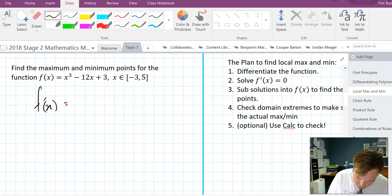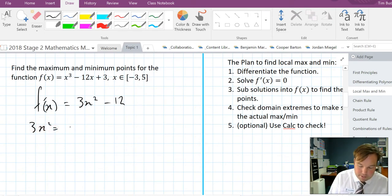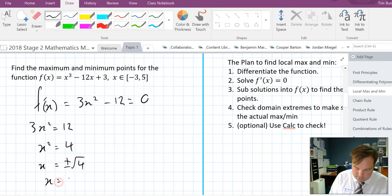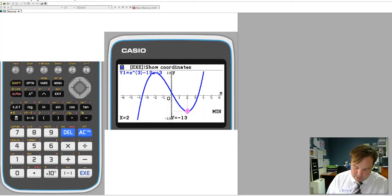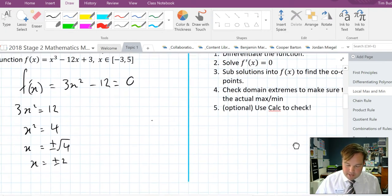Fortunately for us that's quite easy. f dash of x is going to be 3x squared take 12. Then we want to solve for where f dash of x is equal to 0. So we're looking for 3x squared minus 12 equals 0. 3x squared equals 12. Divide both sides by 3, x squared equals 4, x therefore is equal to plus or minus root 4, x is equal to plus or minus 2. Which is comforting because we saw on the calculator that there was a turning point of plus 2 and minus 2.